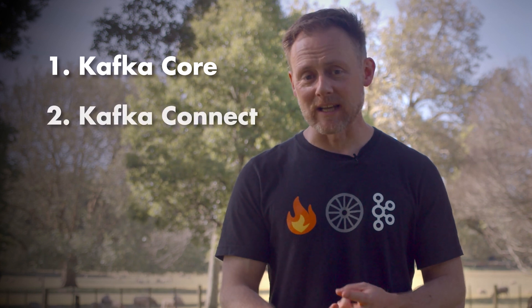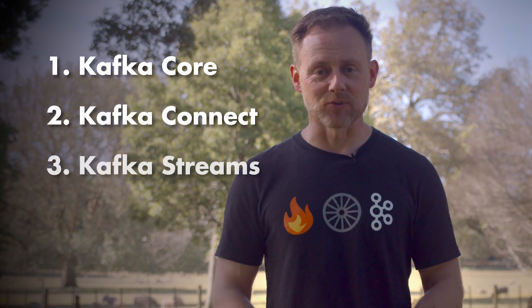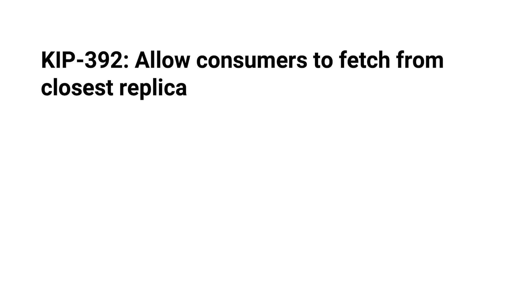I'm gonna group them into three categories: Kafka Core, Kafka Connect, and Kafka Streams. First is KIP 392, which allows fetching from the nearest replica.